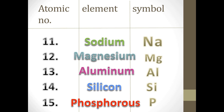The 12th element is Magnesium and its symbol is Mg. The 13th element is Aluminum and its symbol is Al. The 14th element is Silicon and its symbol is Si. The 15th element is Phosphorus and its symbol is P.